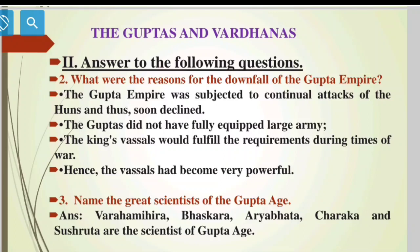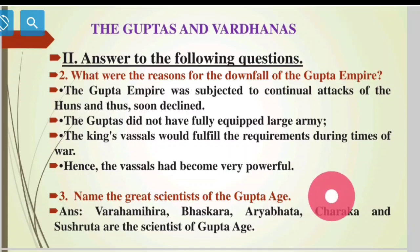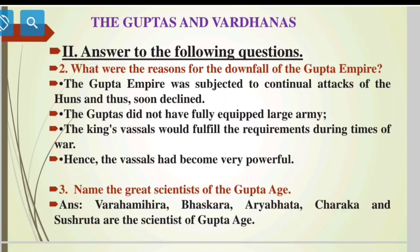Name the great scientists of the Gupta age. Answer: Varaha Mihira, Bhaskara, Aryabhata, Charaka, and Sushruta are the main scientists of the Gupta age.